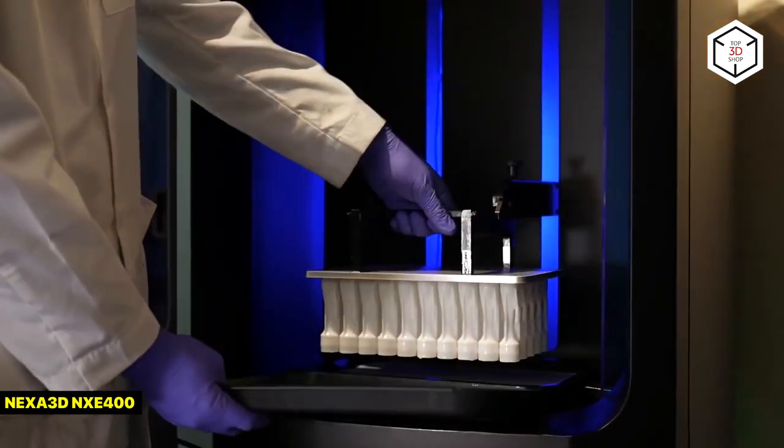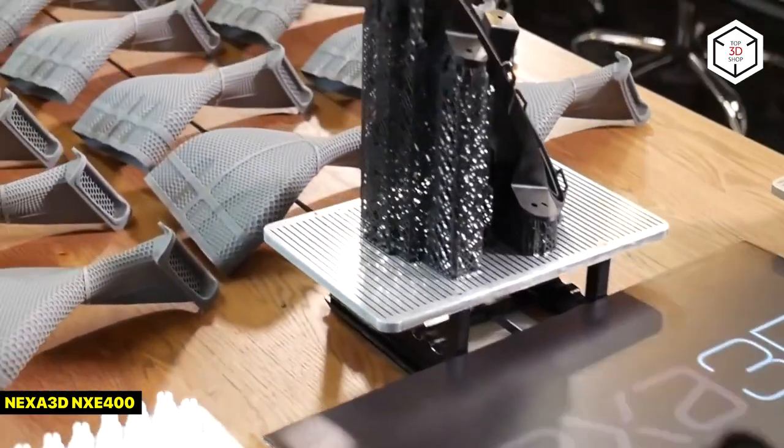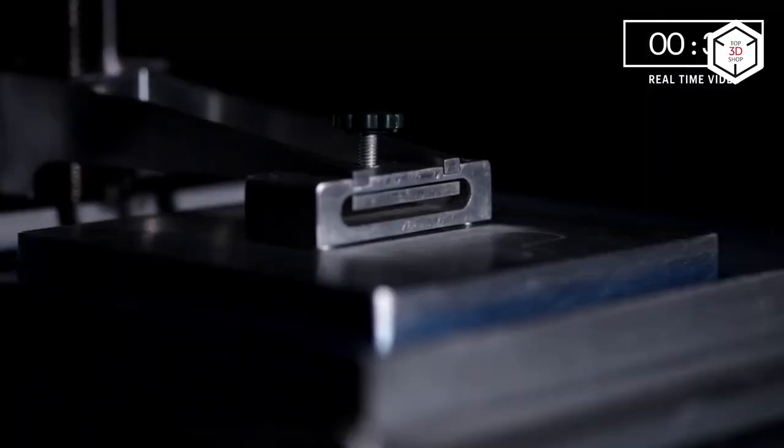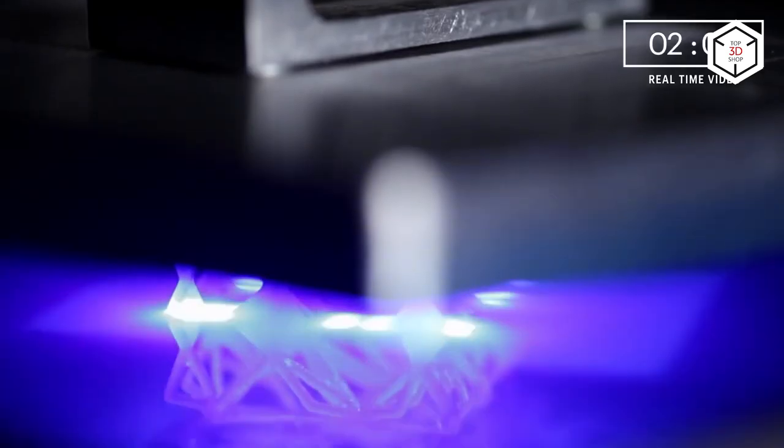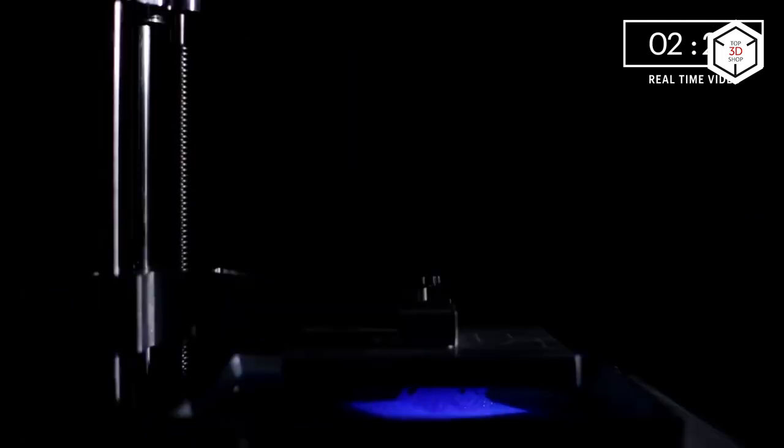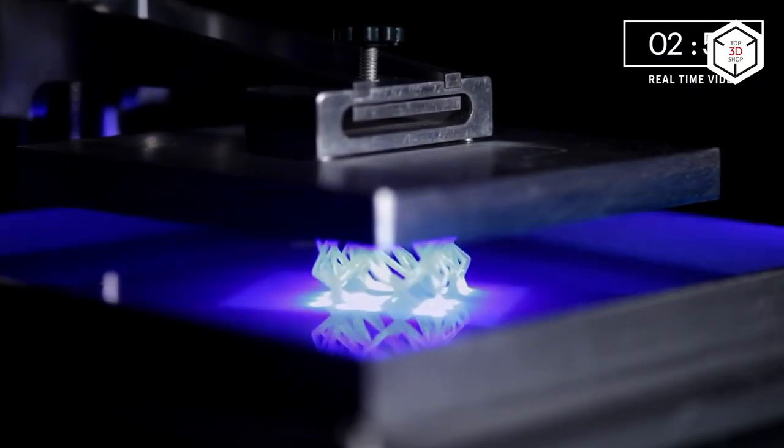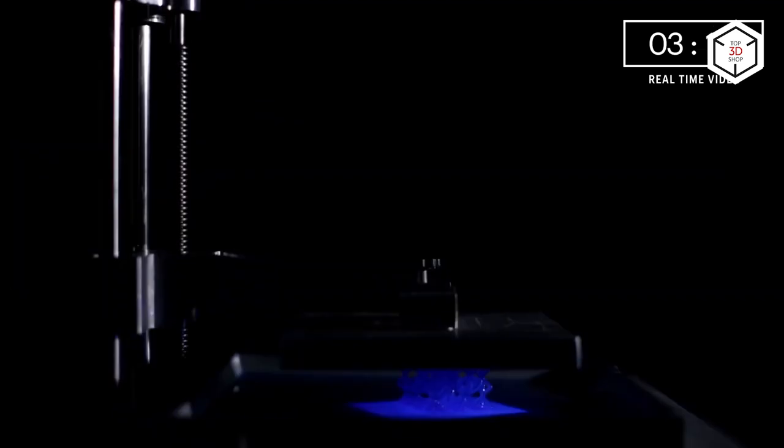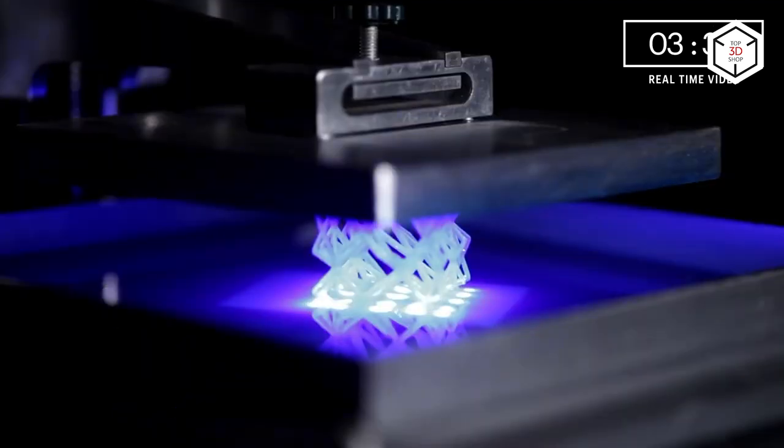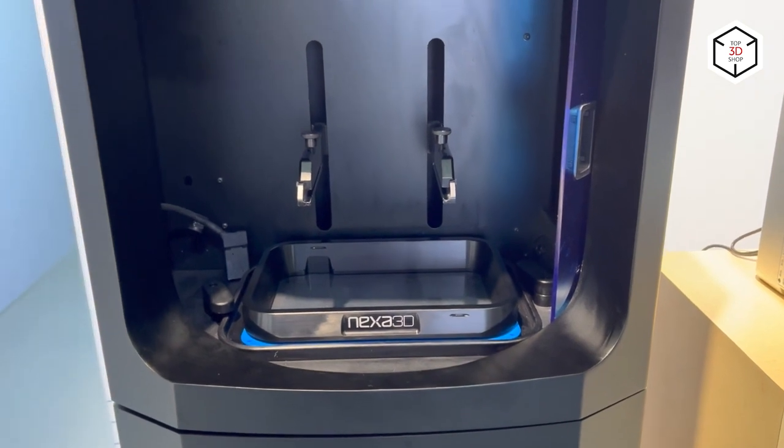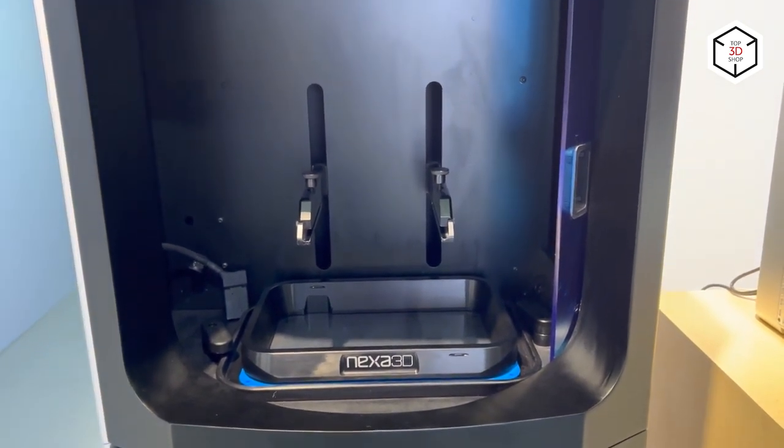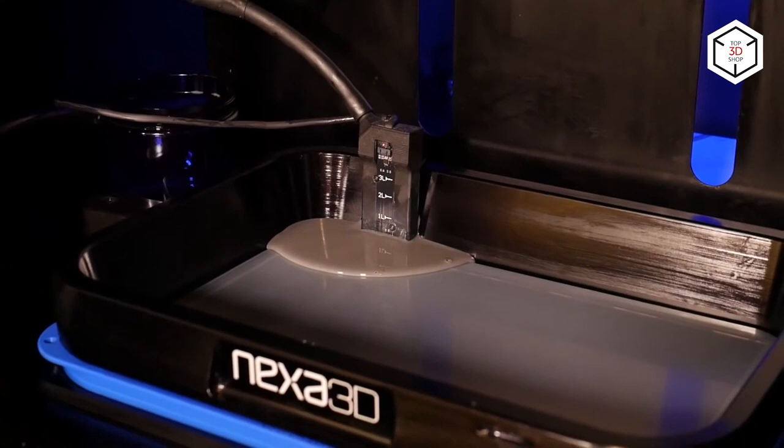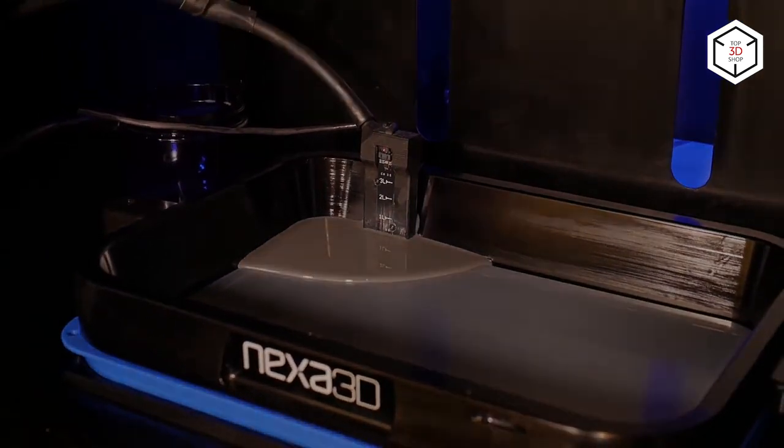LSPC, or Lubricant Sublayer Photo Curing by the Nexa 3D company, uses a similar principle to CLIP being different in some respects. Nexa 3D produces several models based on LSPC technology, including the NXC 400 model with a print volume of 274 by 155 by 400 millimeters. This model is suitable for both industrial prototyping and small volume manufacturing. The LSPC printers are equipped with replaceable resin cartridges, so you don't have to refill the vat during the printing process.